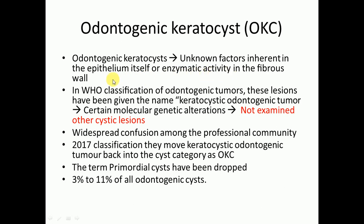Keratocysts enlarge by means of factors inherent in the epithelium itself or enzymatic activity in the fibrous wall. As mentioned in our previous lecture, enzymes present in the capsule — prostaglandin E2, E3, and leukotrienes — may be responsible for expansion of the odontogenic keratocyst and resorption of surrounding bone.